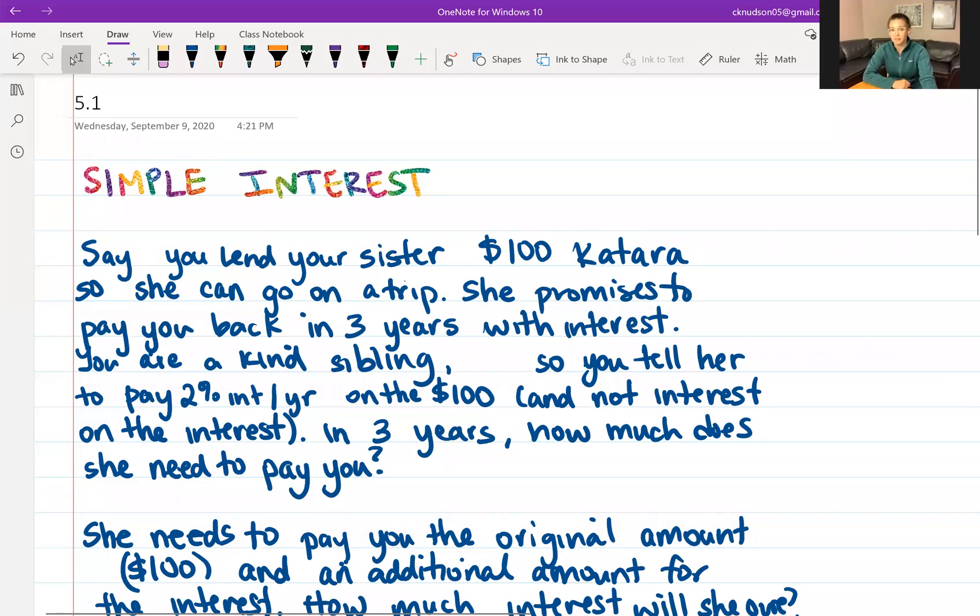We'll start with a couple examples. Your sister Katara needs to borrow $100 so that she can take a trip. She says that in three years, she'll pay you back with interest, and since you're a very kind sibling, you tell her that she doesn't have to pay interest on the interest. You're just going to ask her to pay interest on the $100 that she's borrowing. So in three years, how much does she need to pay you in order to repay you the $100 and give you interest?